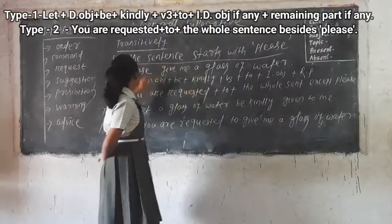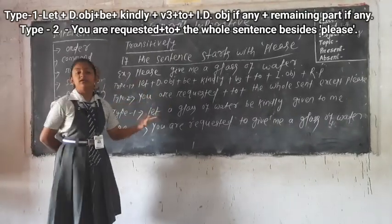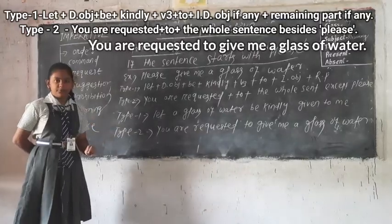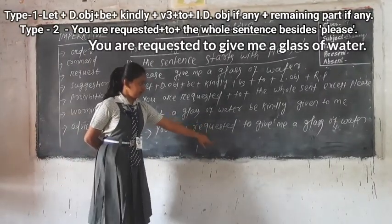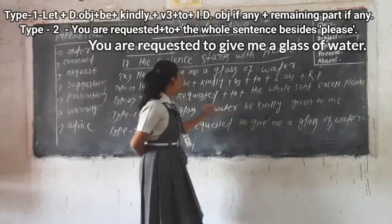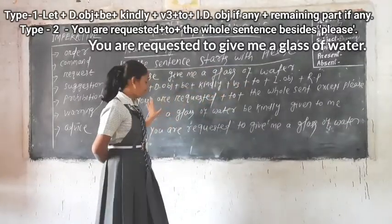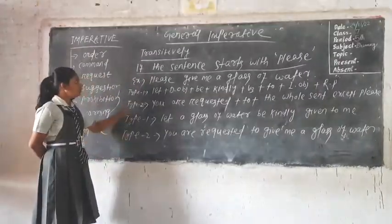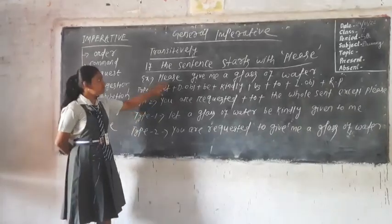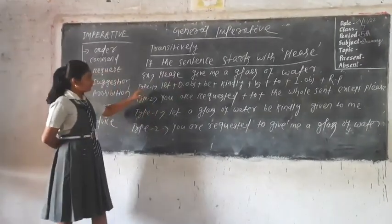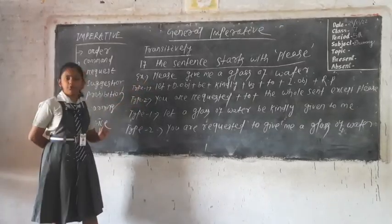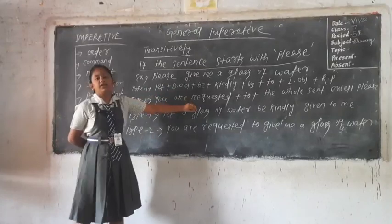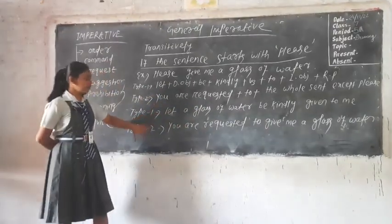Type 2 is: you are requested + to + the whole sentence, writing the whole sentence except please, since we have already written 'you are requested' at the beginning. So type 2 becomes: 'you are requested to give me a glass of water'. If the imperative sentence starts with please and there are two objects, the passive can be formed in two ways — we can either use the let plus direct object structure or the you are requested structure. Both structures are acceptable.